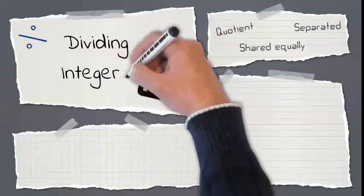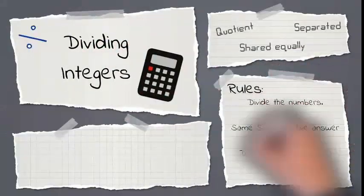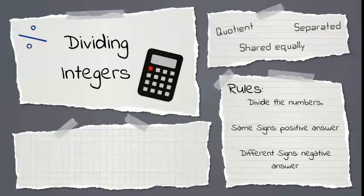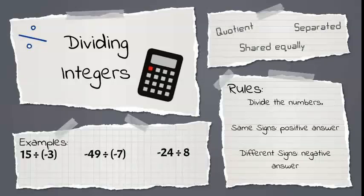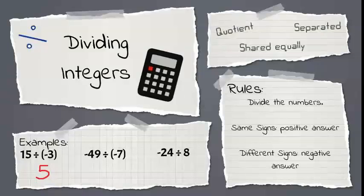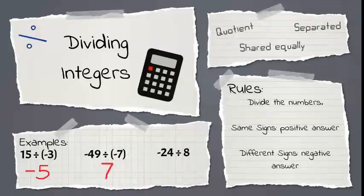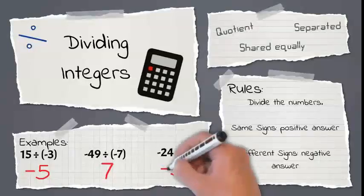And last but not least, let's check out division. The rules for division are the same as multiplication — divide the numbers, and if they have the same sign, the answer is positive; if they have different signs, the answer is negative. 15 divided by negative 3: 15 divided by 3 is 5, and since the signs are different, our answer is negative. Negative 49 divided by negative 7: 49 divided by 7 is 7, and the signs are the same, so our answer is positive. Last, negative 24 divided by 8: 24 divided by 8 is 3, and the signs are different, so our answer is negative.